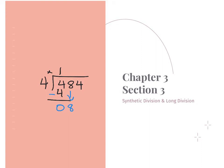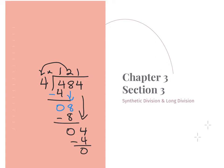What do I have to times four by to make it an eight? I times it by two, and then you put two times four and put it underneath, subtract, bring down. Four times one, so you put a one on top, subtract, and you get a remainder of zero. This is what we're going to be doing, but we're going to be doing it with polynomials.